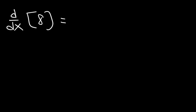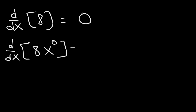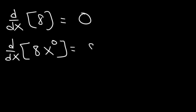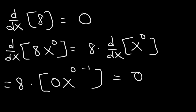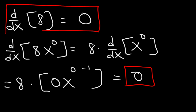Now what about the derivative of a constant? The derivative of any constant is 0. One way you can remember that is you can write 8 as 8 times x to the 0, because x to the 0 is 1. So this is 8 times the derivative of x raised to the 0. Using the power rule, it's going to be 0x raised to the 0 minus 1, and 0 times anything is 0. So make sure you remember that: the derivative of any constant is always equal to 0.